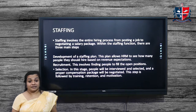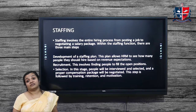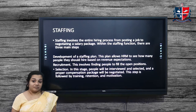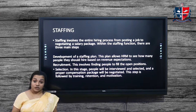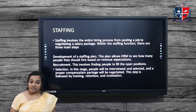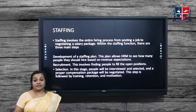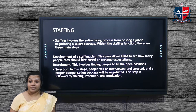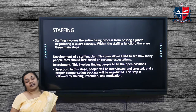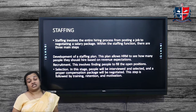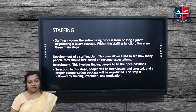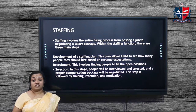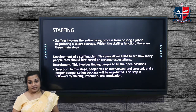External recruitment means the organization adopts different ways to recruit employees, including advertisement, campus placement, etc. The next step is selection. In the selection stage, people are interviewed and selected, and the proper compensation package is negotiated. The selection process is then followed by training, retention, and motivation.